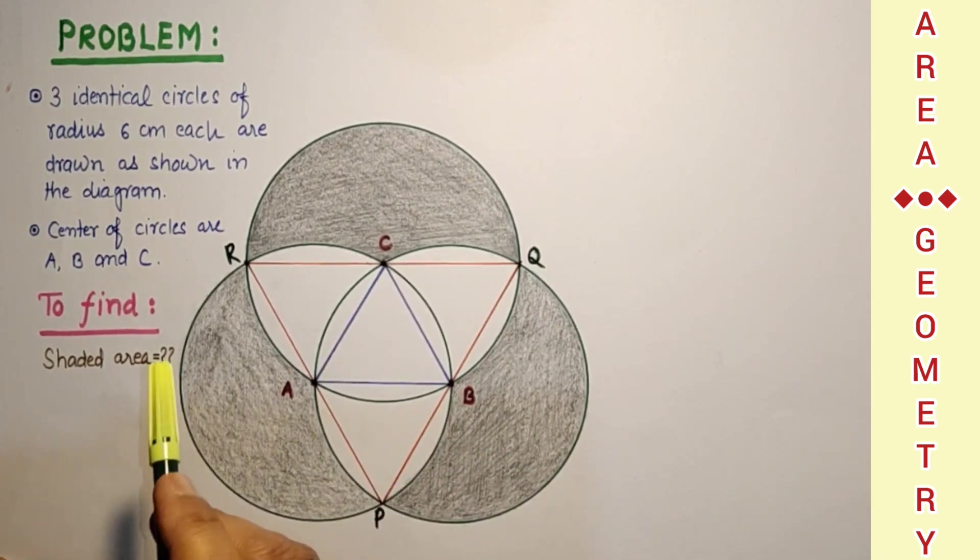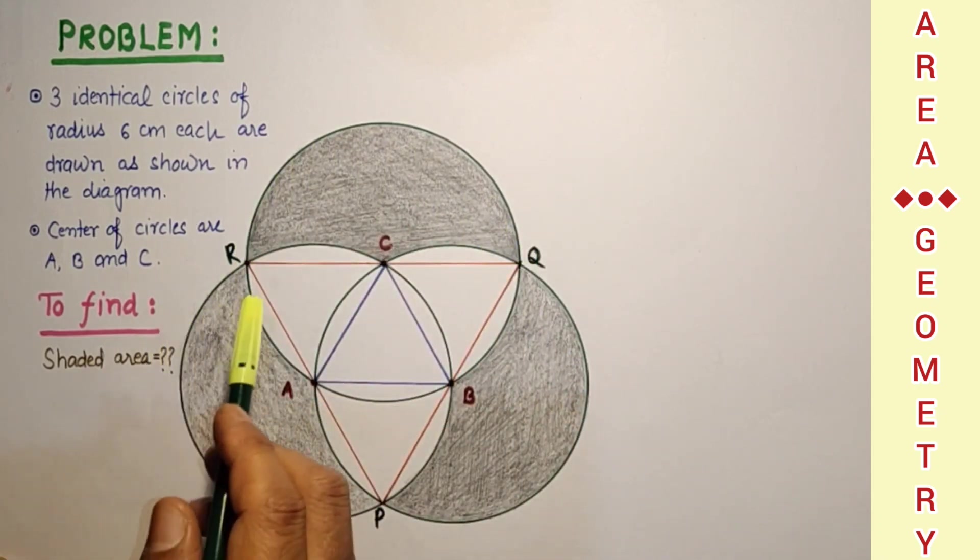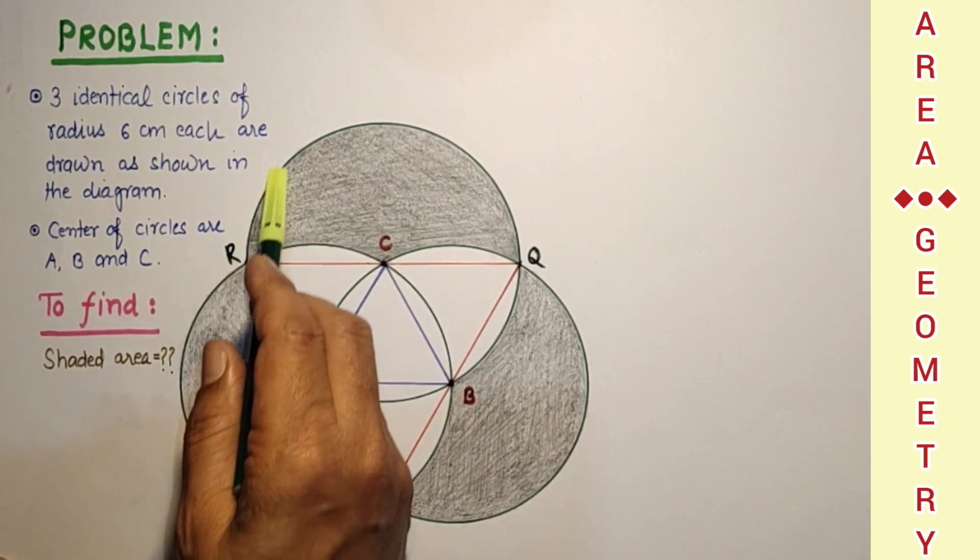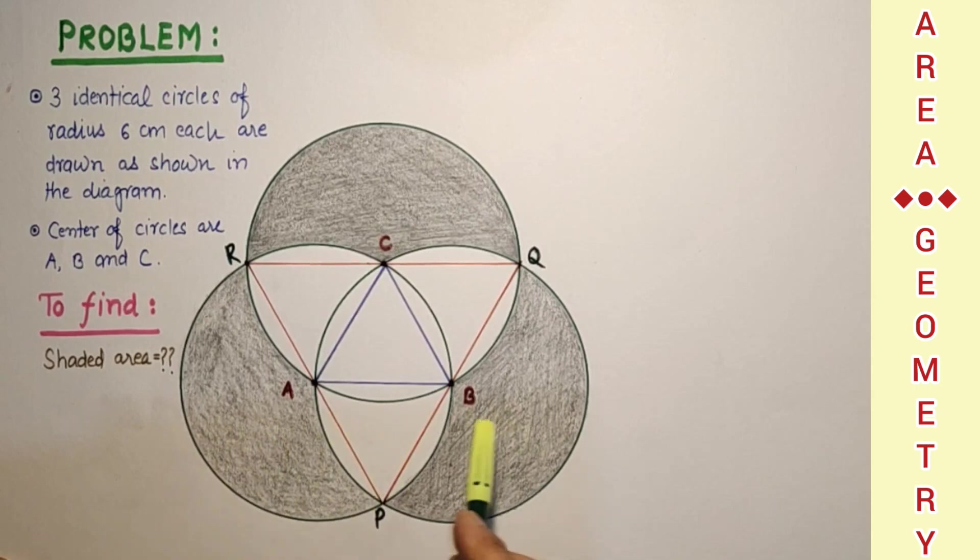To get the required shaded area, if we find this semicircle's area and if we subtract these two white segments, then we will get this part. And if we multiply with these three identical shaded parts, we will get the required area.